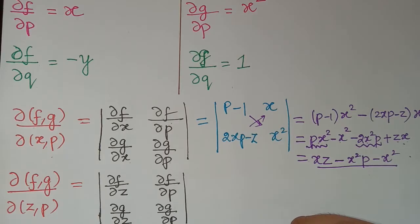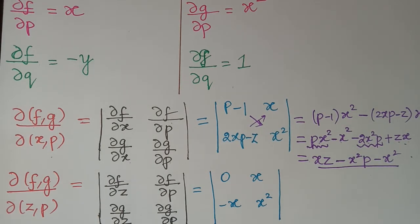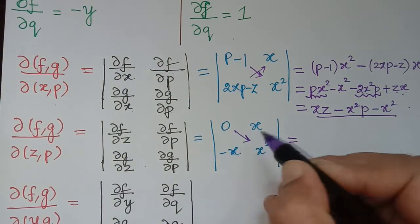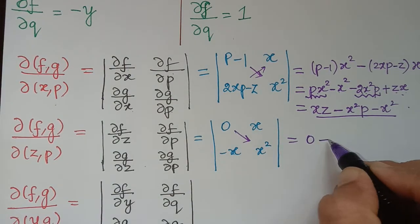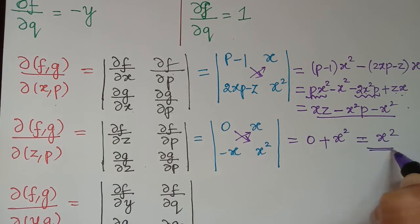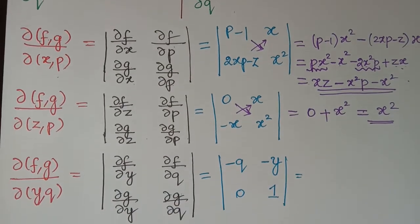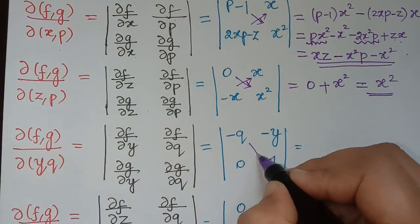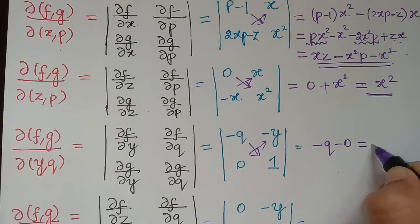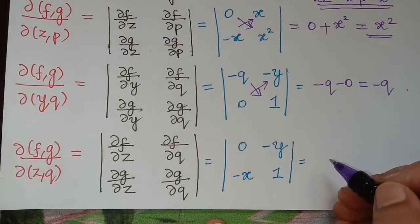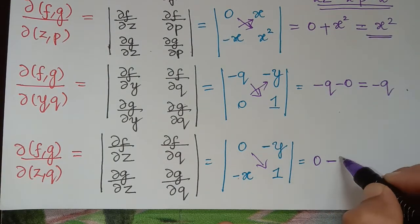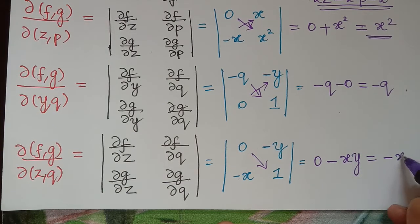The second Jacobian ∂(f,g)/∂(z,p) gives the determinant with entries ∂f/∂z=0, ∂f/∂p=x, ∂g/∂z=−x, ∂g/∂p=x². Evaluating: 0·x² minus (−x)·x = 0 + x² = x². The third Jacobian ∂(f,g)/∂(y,q) gives entries ∂f/∂y=−q, ∂f/∂q=−y, ∂g/∂y=0, ∂g/∂q=1. Evaluating: (−q)·1 minus 0·(−y) = −q. The fourth Jacobian ∂(f,g)/∂(z,q) gives entries ∂f/∂z=0, ∂f/∂q=−y, ∂g/∂z=−x, ∂g/∂q=1. Evaluating: 0·1 minus (−x)·(−y) = −xy.